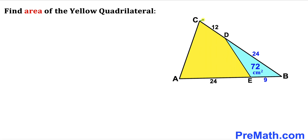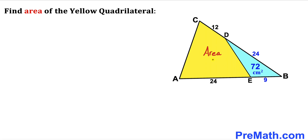The respective side lengths are 12, 24, 9, and 24. Furthermore, the area of the blue triangle is 72 centimeters square, and our task is to calculate the area of the yellow quadrilateral.